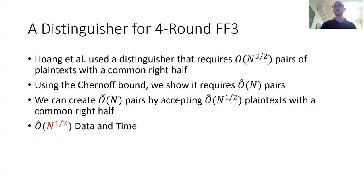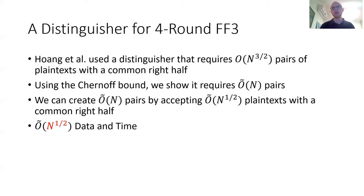Sadly, the exact workings of this distinguisher are outside the scope of this presentation. However, if you are interested, they are presented in the paper. For this presentation, we will use this distinguisher as a black box. Only note that it does require square root of N plaintexts that all have a common right half.